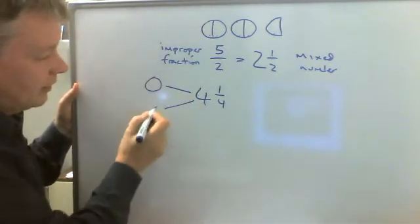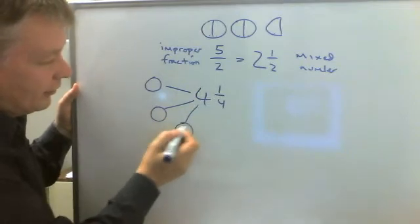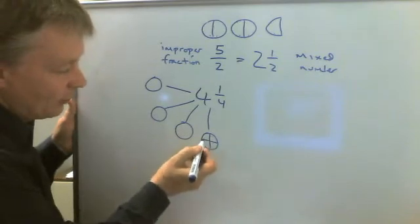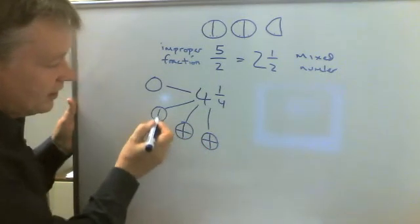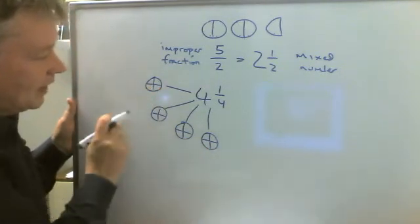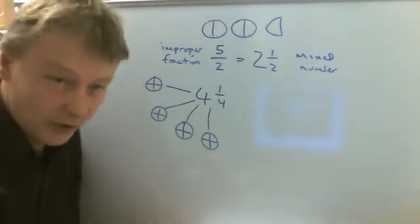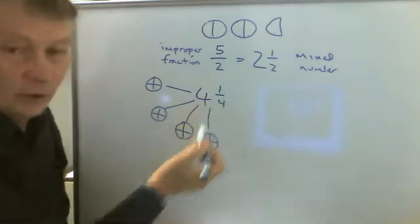So there's one, two, three, four pizzas. And I'm going to split all of those four pizzas into quarters. And I've got four, eight, twelve, sixteen quarters plus the one quarter here.